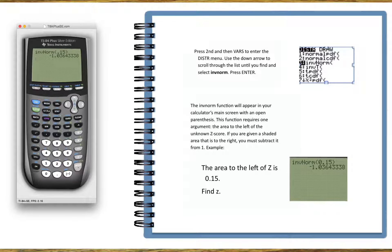That's how you find the z-score of an area to the left.